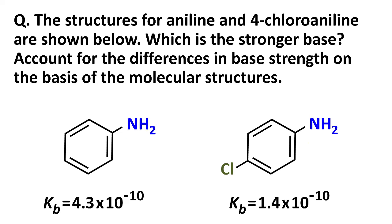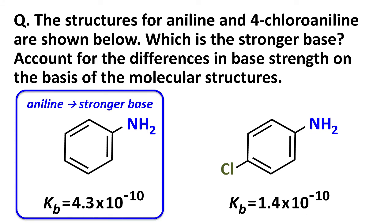And we can check this by looking at Kb values. And yes, the Kb for aniline, 4.3 times 10 to the minus 10, is in fact a little bit bigger than the Kb for chloroaniline, 1.4 times 10 to the minus 10. So our prediction is borne out. Aniline is the stronger base using the same molecular structure arguments that we used previously.